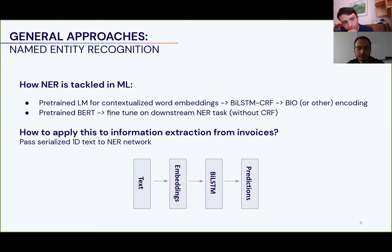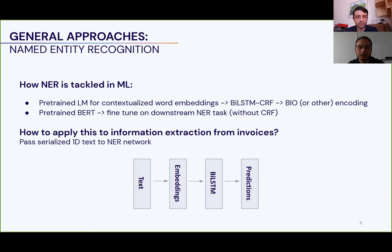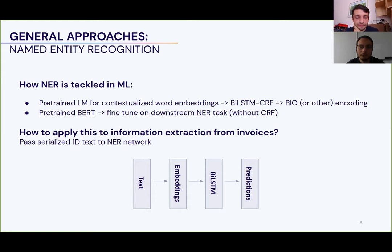This approach has one obvious disadvantage: we lose the 2D information altogether. When humans parse invoices visually, the text itself is not enough for identifying entities — we also make use of positional information of the words, their relative locations, tables, lines, etc. Even if the text alone were sufficient, positional and relative information would still be very useful. It would be much wiser to incorporate the 2D information into our model as well.